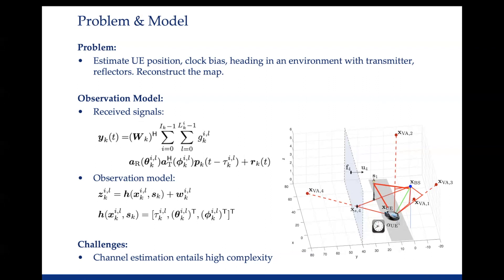Given the observation and the knowledge of the sent signal and the combiner, the channel estimator can recover the geometric information such as delays, angles of arrival, and angles of departure. Given those angles and delays, we then need to figure out the vehicle state and also map the environment. The challenge is that channel estimation usually entails high complexity. However, we always prefer a channel estimator that can provide accurate estimations with low complexity, especially when used in positioning and mapping.